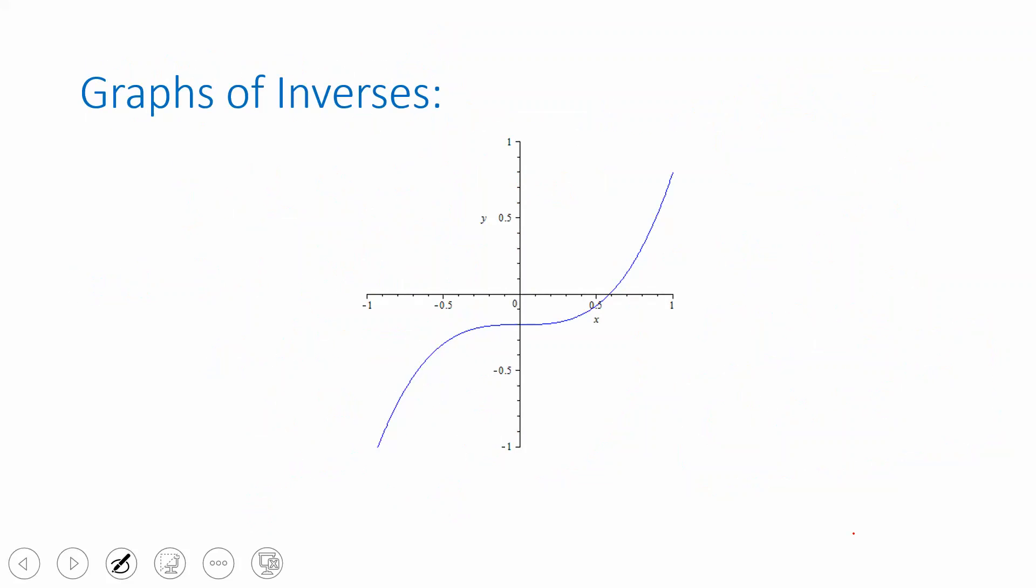So for example here's a function and here's the graph of the inverse of that function. Now you'll notice that there's some symmetry here and it turns out that the graphs are related. The graph of the function and the graph of the inverse are reflections of each other across this line y equals x. That's always the case. If one of these is f and the other one is f inverse, they will always be symmetric around this line y equals x. That's part of what you get when you graph f of x and f inverse of x on the same coordinate plane.